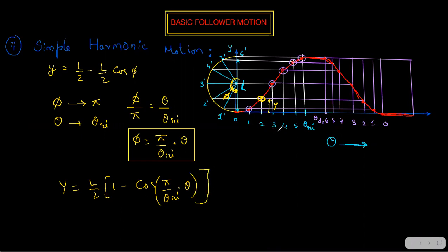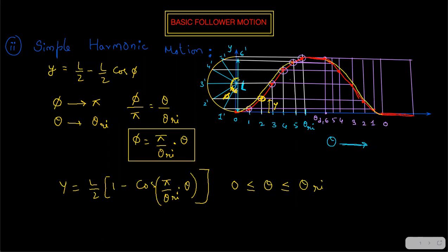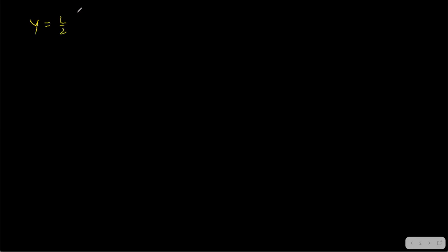This general equation is valid for theta between 0 and theta-rise — it applies only to the rise. The return equation is the same but works in the opposite direction, going downward. So with this one equation we can analyze everything. The general displacement equation is: y = (L/2)(1 - cos(pi·theta / theta-rise)).